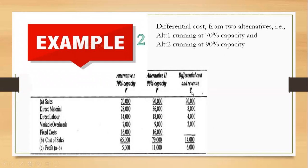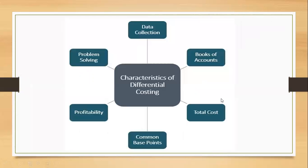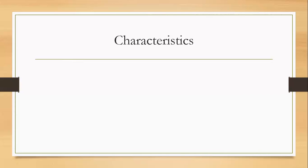Arriving at differential cost and differential revenue, the sales increased by 20,000, whereas the cost is 14,000. The difference in cost is 14,000, giving an increase in profit of 6,000 when you increase the capacity from 70% to 90%.